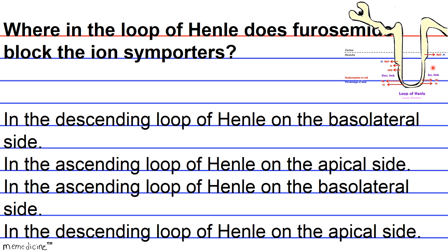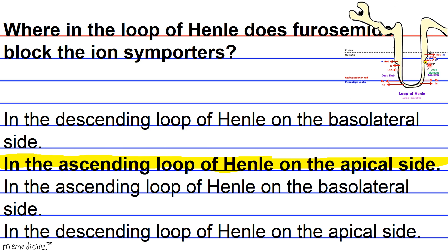Moreover, the symporter is located in the luminal side, the apical side, to remove salt from the filtrate. So the correct answer choice is answer choice B. In the loop of Henle, only water reabsorption occurs in the descending loop. So ion reabsorption in the loop of Henle occurs in the ascending loop. Therefore, furosemide blocks the ion symporters on the apical side of the ascending loop of Henle.